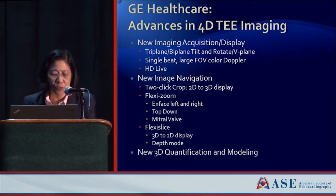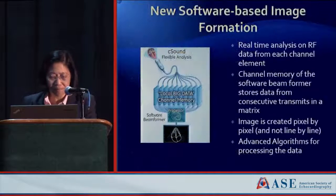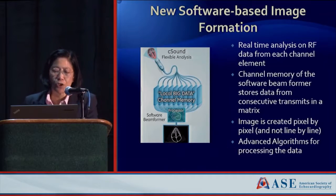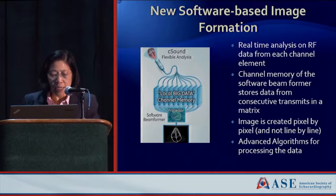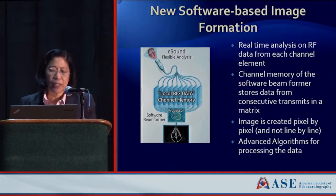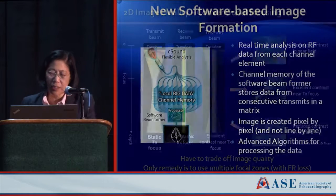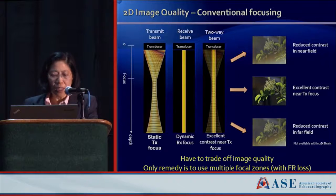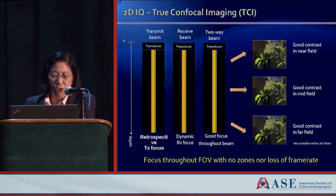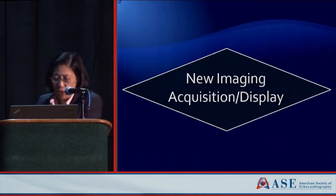We'll end with a little bit of the 3D quantification and modeling. The new software-based image formation allows you to see a lot of data about a single point in space and evaluate it from many different angles, then generate the image in an extraordinarily fast processing mode, which allows you to manipulate the image in ways never previously possible. The continuous focus is also of significant advantage for everything we do.